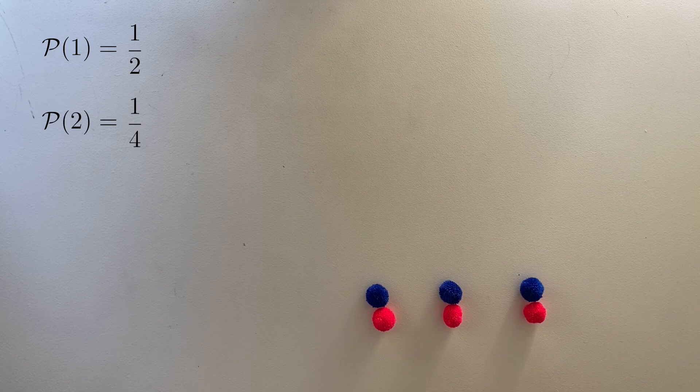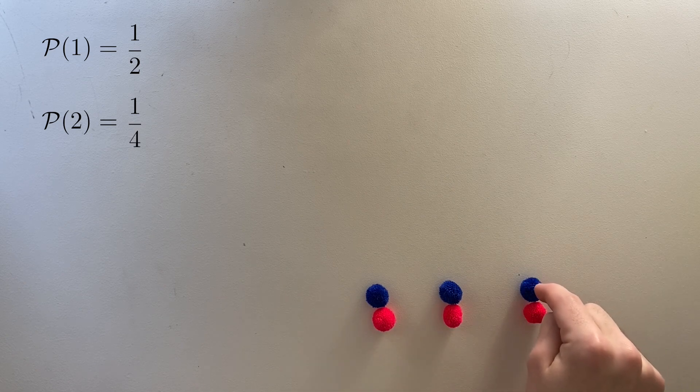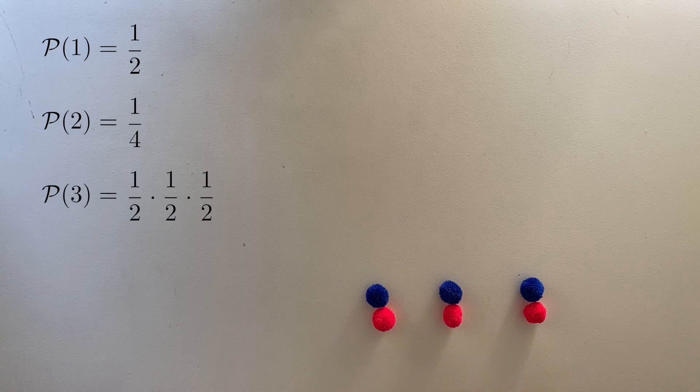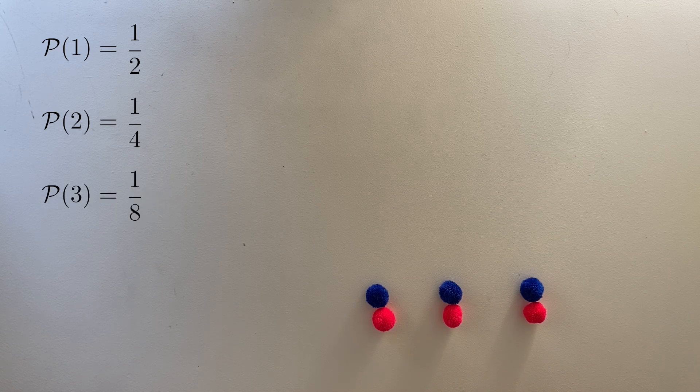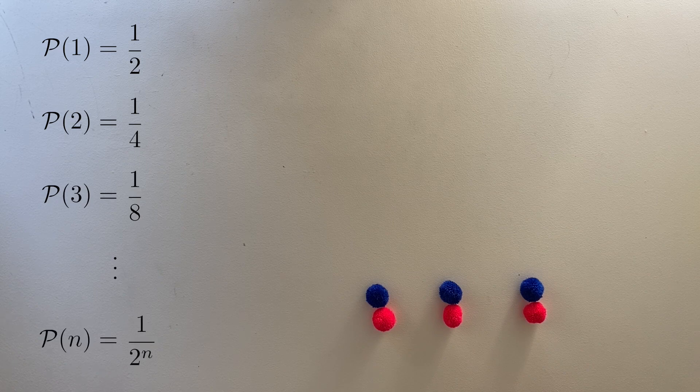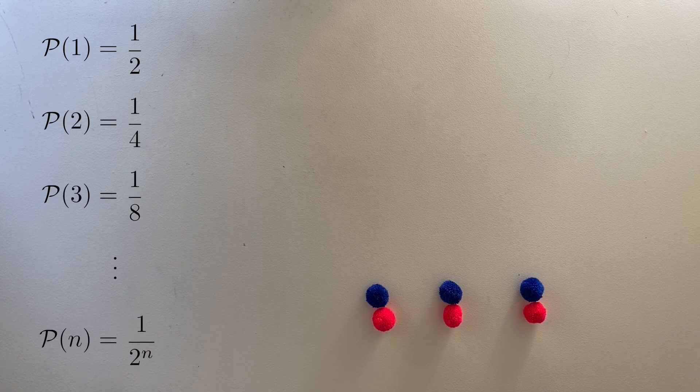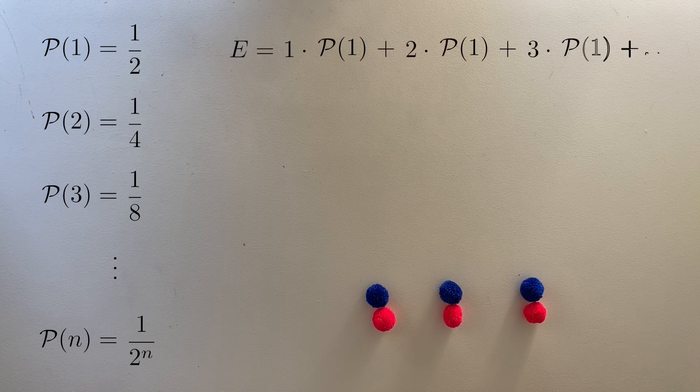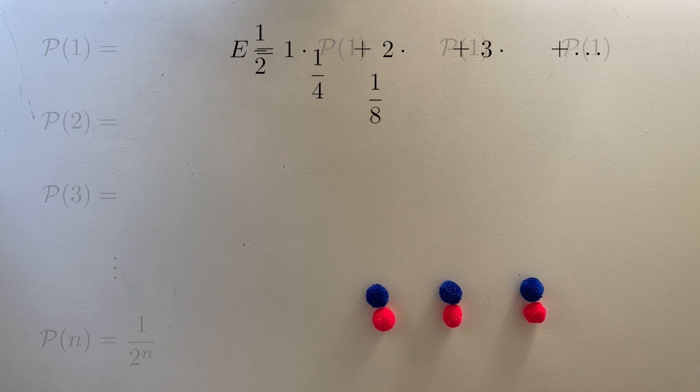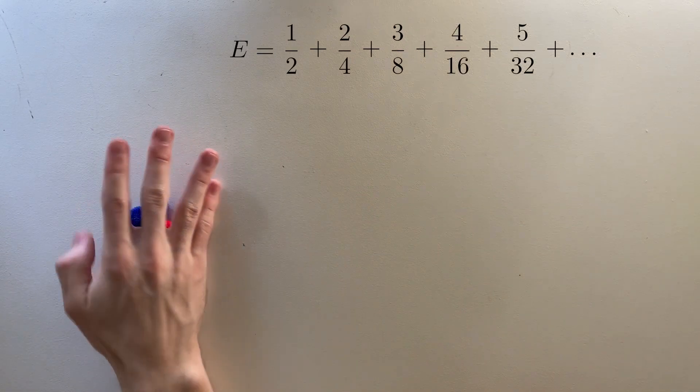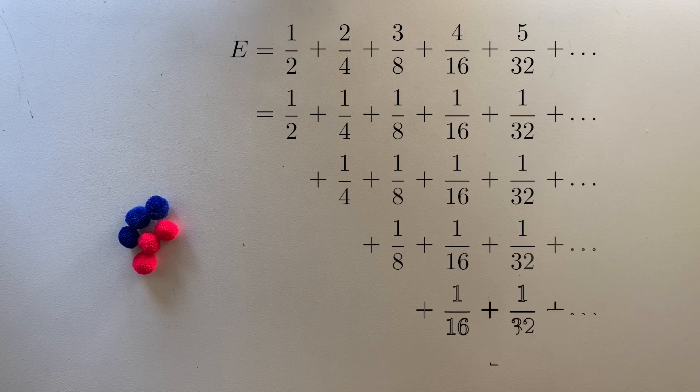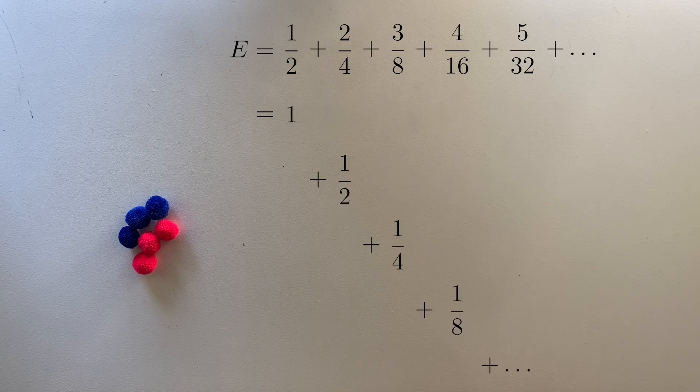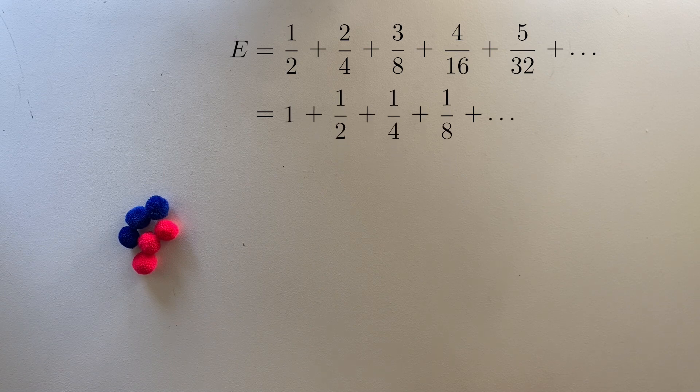In order to get the blue ball on round three, we need to draw the red ball on the first two rounds and the blue ball on the third. So that's a half times a half times a half, or one in eight. Continuing this pattern, the probability of drawing the blue ball on round n is one in two to the n. Now we can calculate the expected value. Take each outcome, multiply by its probability, and add them all together. I'm going to skip over the calculation, but you can slow down the video and look through each step if you want to. As expected, this infinite sum approaches two.